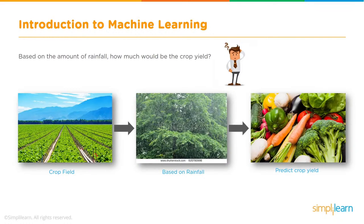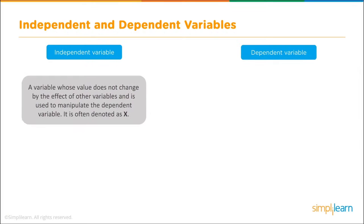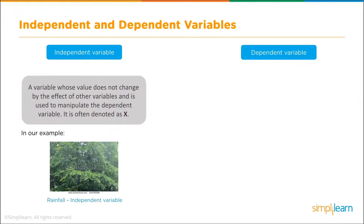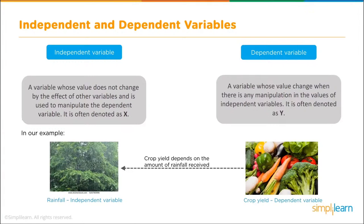In the crop yield example, we have two variables. The independent variable — denoted x — is the one whose value doesn't change due to other variables; here it is rainfall, which we cannot control. The dependent variable — denoted y — changes when the independent variable is manipulated; here it is crop yield, which depends on the amount of rainfall received.